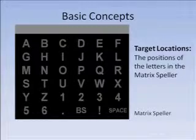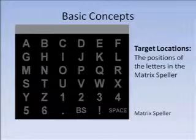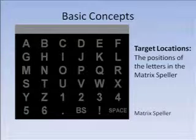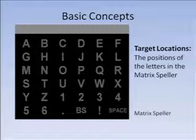We use a matrix speller which consists of 36 cells showing letters and some commands, such as space, during the experiment. Target locations means the position of the letters in the matrix speller. The subjects could select the letters for the contents they need to type into the computer.